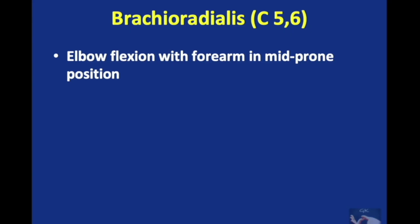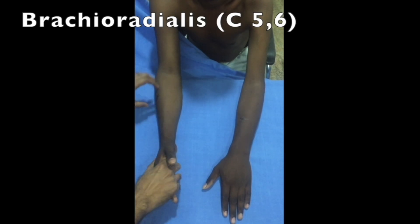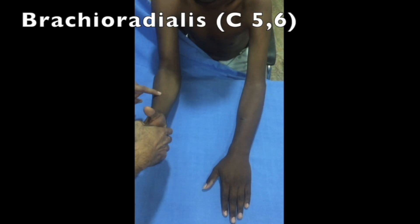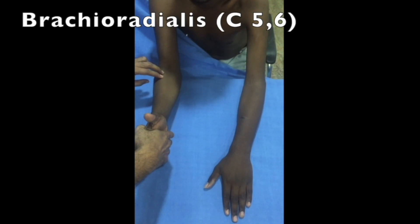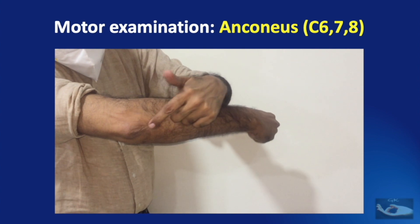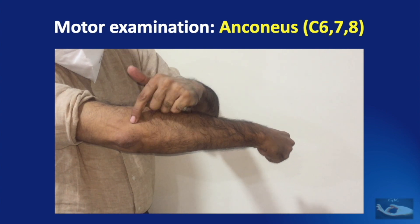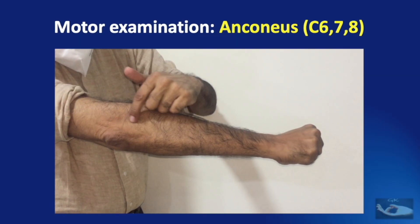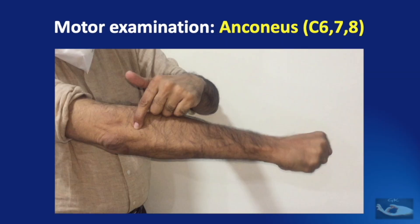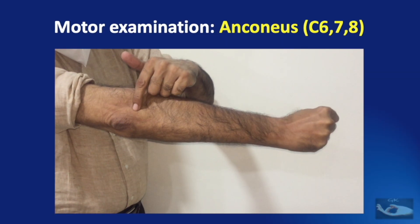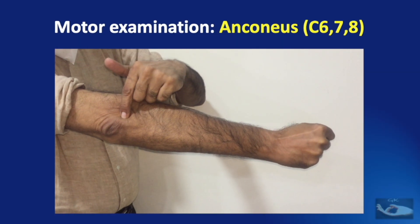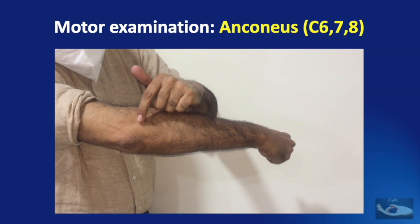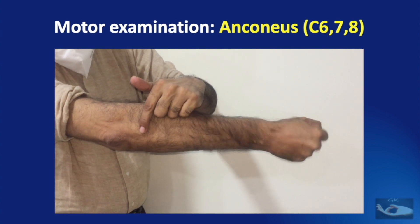When testing the brachioradialis, an important point: elbow flexion must be tested with the forearm in mid-prone position. You can palpate and even see the brachioradialis muscle becoming prominent. The anconeus muscle is a small muscle that originates from the posterior surface of the lateral epicondyle of the humerus and inserts distally on the superior posterior surface of the ulna and lateral aspect of the olecranon. It acts almost as an extension of the triceps and stabilizes the joint capsule during full extension of the elbow, and can be palpated on the radial side of the subcutaneous portion of the ulna.